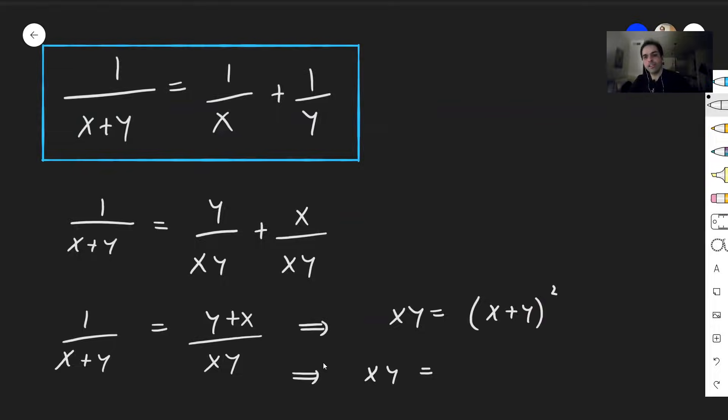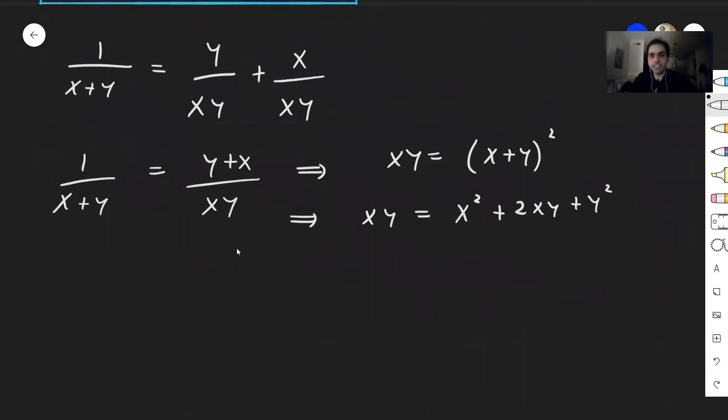So xy, expanding this out, is x squared plus 2xy plus y squared. And then in the end what we get, putting this xy here, we get x squared, 2xy minus xy that's just xy, plus y squared equals 0.